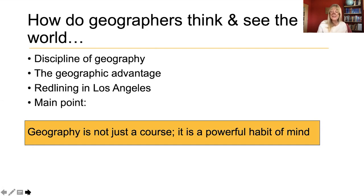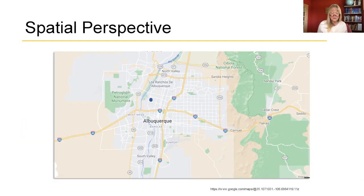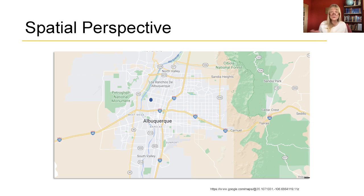In essence, there are two key perspectives to the discipline of geography: the spatial perspective and the environmental perspective. Geographers focus on the spatial dimensions of human experience captured by the concepts of space and place. We ask where and why there, and why not somewhere else, to understand spatial relationships at a range of scales.